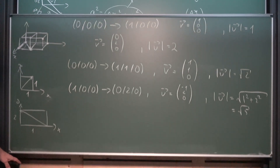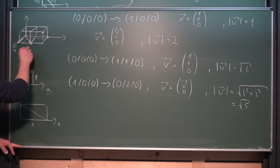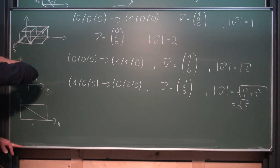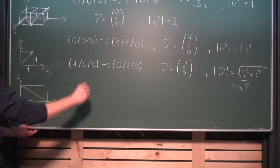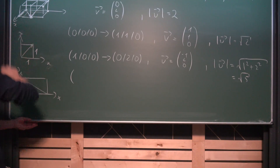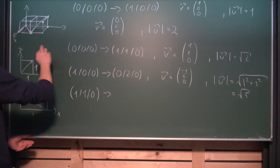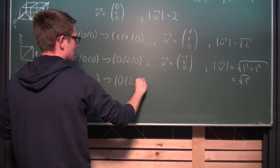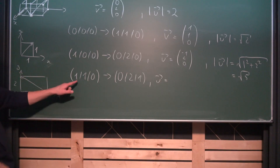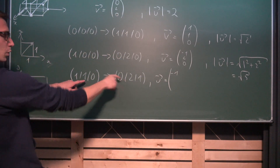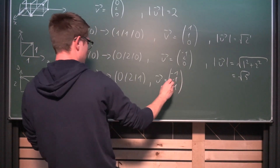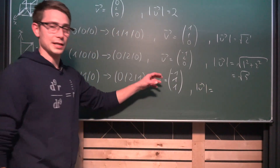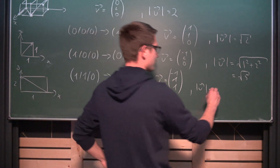Now let's construct a more interesting vector. Starting from the point one one zero and going to zero two one, our vector is negative one, one, and one. Using Pythagoras in three dimensions we get the square root of negative one squared plus one squared plus one squared, which is the square root of three.